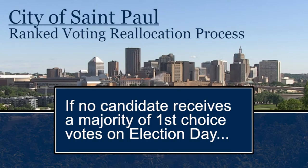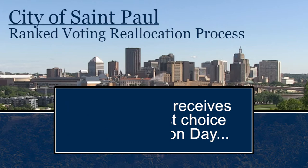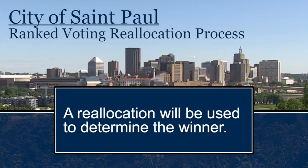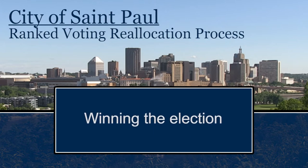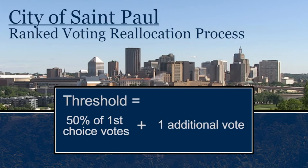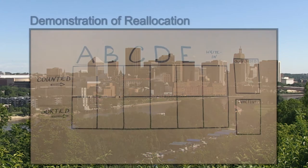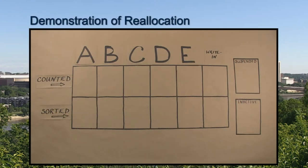If no candidate receives a majority of first-choice votes cast on Election Day, a reallocation will occur to determine the winner. A candidate is declared the winner once a candidate meets the threshold. The following example demonstrates the reallocation process used in municipal elections in the city of St. Paul.